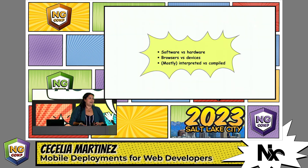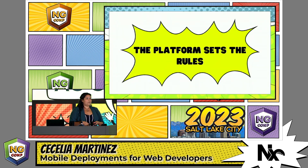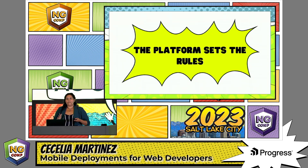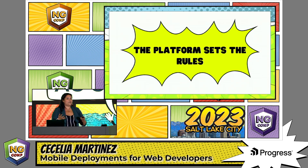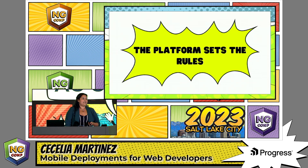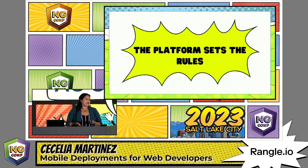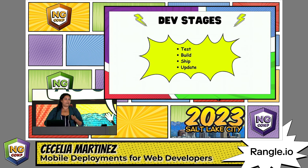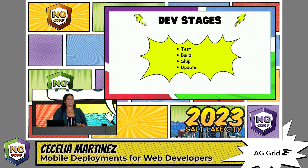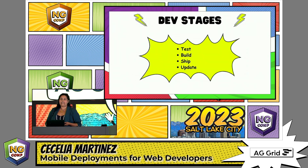The most important thing to keep in mind is that when you're developing and deploying for mobile, the platform sets the rules. You are at the mercy of what Apple and Google ask you to do when building and deploying your application. Understanding those rules as early and as often as possible can help increase the velocity of your deployments. I'm going to take a look at the differences between web and mobile across each stage of development: testing your app, building your app, shipping your app, and updating your app.